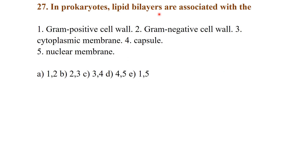In prokaryotes, lipid bilayers are associated with which parts? The gram-positive cell wall does not have lipid bilayers because it has no outer membrane. In gram-negative cell walls, the outer membrane has lipid bilayers. The cytoplasmic membrane also has lipid bilayers; the capsule and nuclear membrane do not. So the best answer is options two and three: gram-negative outer membrane and cytoplasmic membrane.